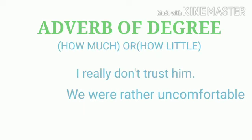Adverb of degree shows to what extent a thing is done. Examples include: little, enough, only, fully, almost, too, quite. For example, 'I really don't trust him' — 'really' is an adverb of degree. 'We were rather uncomfortable' — 'rather' is also telling to what extent. So both give the answer of how little or how much.